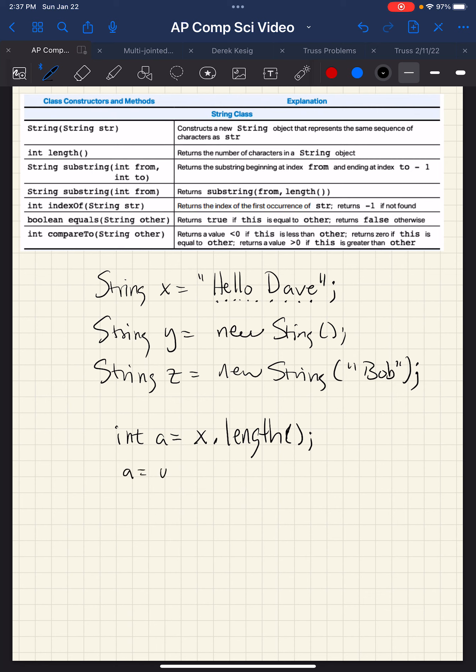If we say a equals y dot length, we'll set a to zero because y doesn't have any characters, so it's an empty string. And if we say a equals z dot length, a will have one, two, three, there's three characters, so it will have the value three. That's how the length method works.